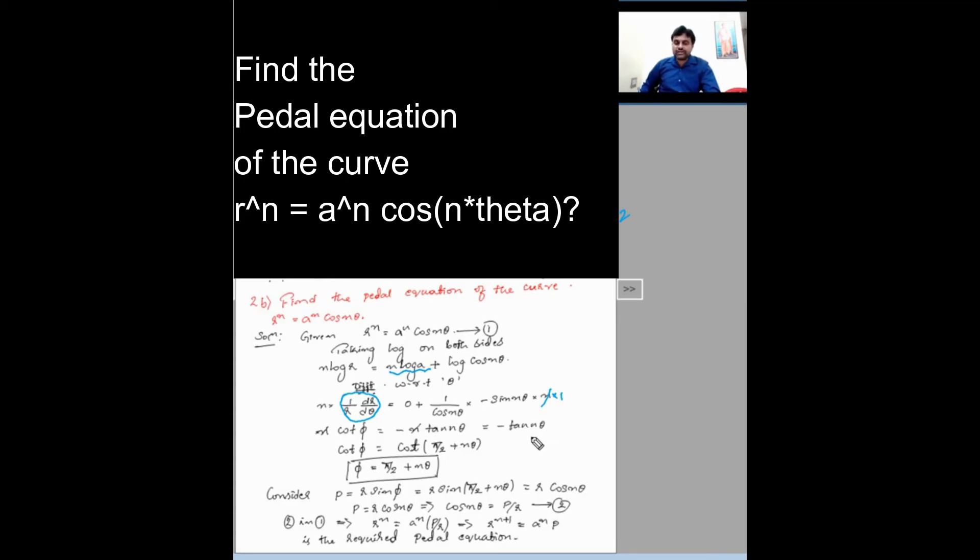I have told you that minus tan theta can be written as cot of phi/2 plus whatever the angle. I have an angle here n theta, so substitute n theta. Phi/2 plus n theta. So cot cot get cancelled. You are left out with phi = phi/2 + n theta.